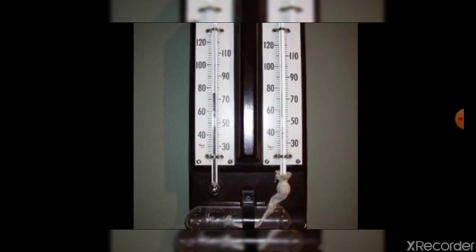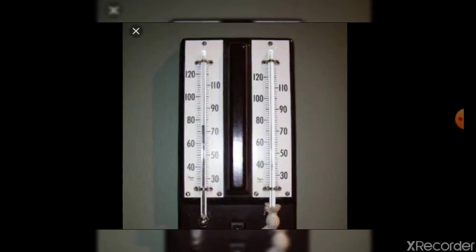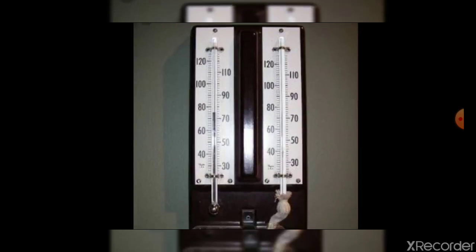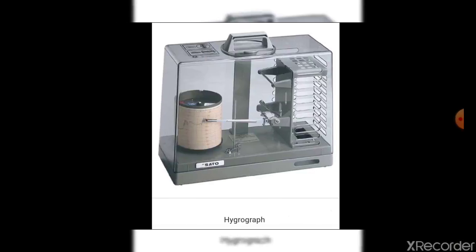A hygrograph is a hygrometer where the wet bulb thermometer is tied to a damp cloth and the dry bulb remains as such exposed to air. A hygrograph can automatically and continuously record variations of humidity in the air on a graph paper.